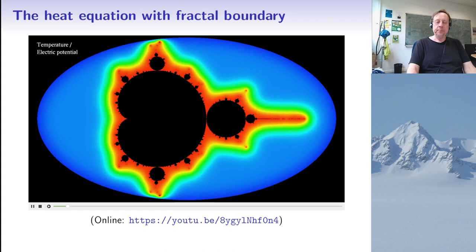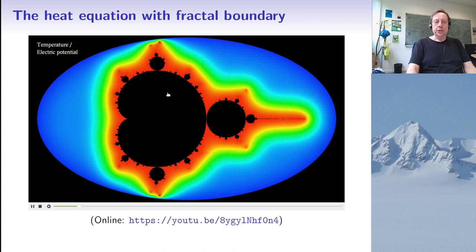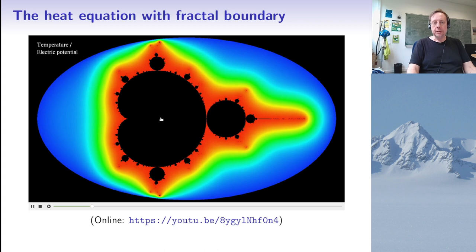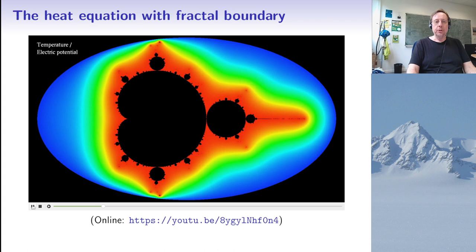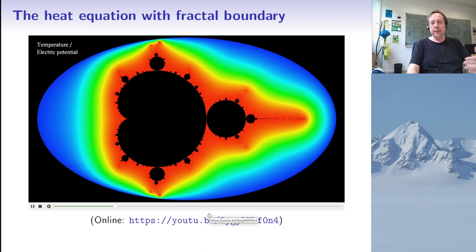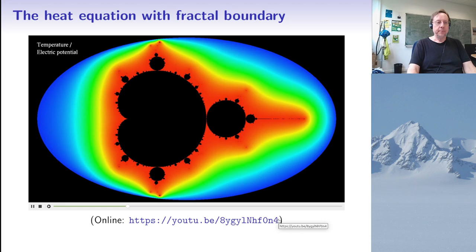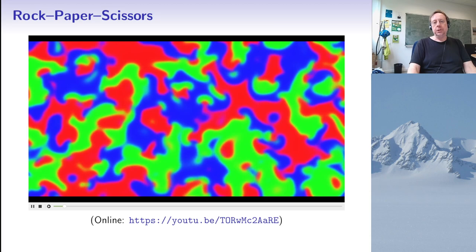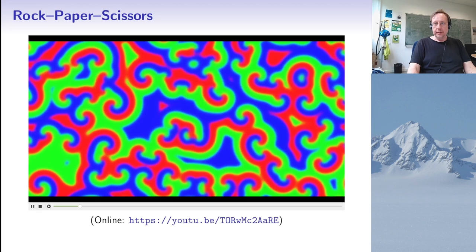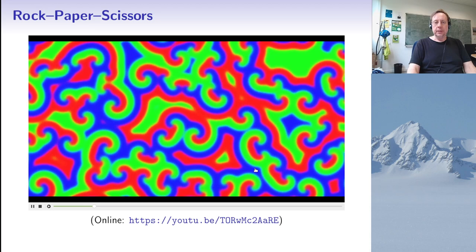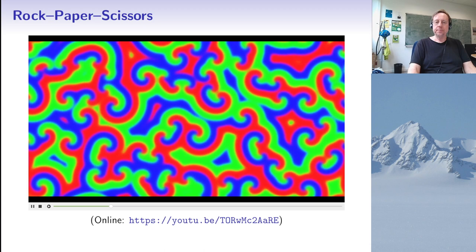Here's a first example of the type of equations we want to simulate: the heat equation. To make things more interesting, I've chosen particular boundary conditions. One boundary is given by the Mandelbrot set, which is at a hotter temperature; the other boundary is outside an elliptic domain set at a colder temperature. You see here how heat diffuses from the hot Mandelbrot set to the colder ellipse. Here's another example, now a reaction diffusion equation called rock-paper-scissors, which models a simple chemical reaction with three types of molecules. The concentrations are shown in red, green, and blue, and you see the appearance of spirals.